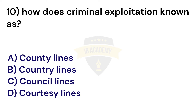Question 10: How is criminal exploitation known? The correct answer is Option A: County lines. This is when gangs and organised crime groups use children and young adults to sell drugs. These children and young adults are often forced to travel across counties — for example by train or in taxis and private hire vehicles — and they use mobile phone lines to keep in contact with individuals in the drugs trade.